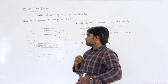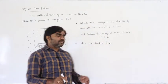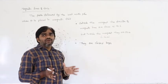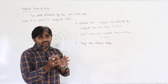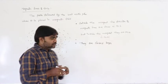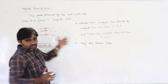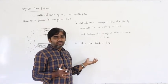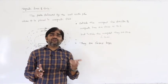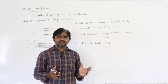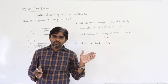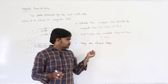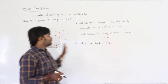If two magnetic lines intersected, there would be two directions of magnetic field at the point of intersection, which cannot exist — that is why no two magnetic lines of force can intersect. Where magnetic lines of force are very crowded, that is a strong magnetic field; where they are more spread out, that is a weak magnetic field.